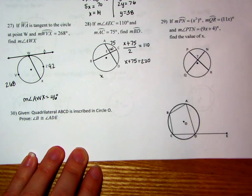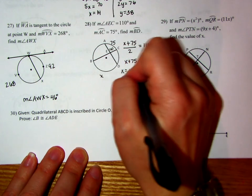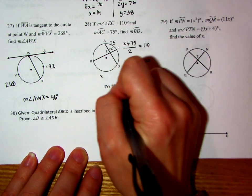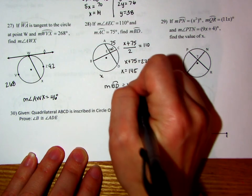And then the next thing we want to do is subtract 75 from both sides so that we get 145. So the measure of arc BD is going to be 145 degrees.